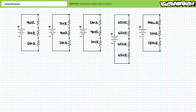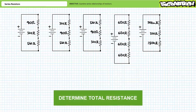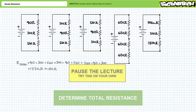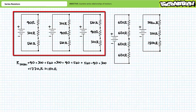Here's another set of series circuit example problems, each intended to illustrate important properties of resistors in series. The first three circuits are just different configurations of the same three resistors in different orders. As such, the total resistance for each is 1770 ohms, or roughly 1.8 kilo-ohms. This illustrates that the order of resistors in a series circuit does not influence the total resistance seen by the source.